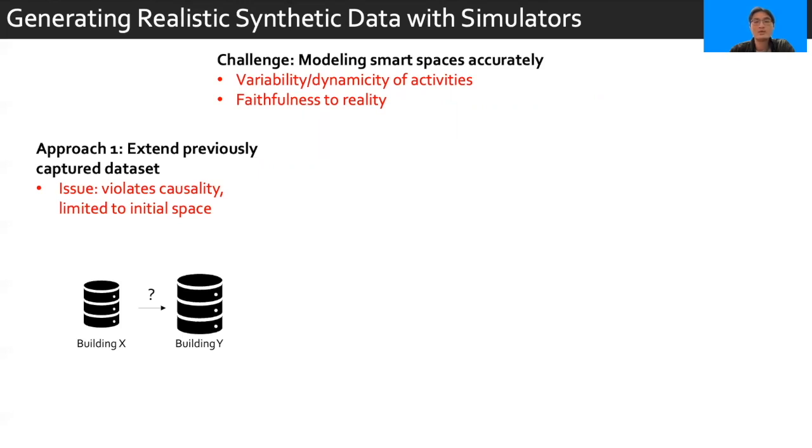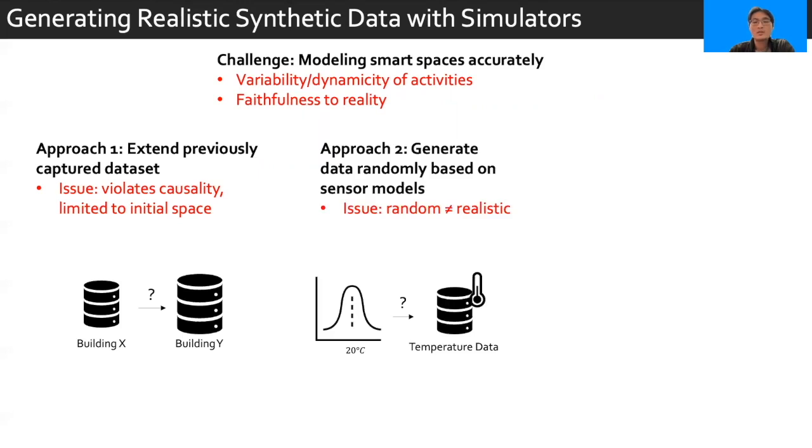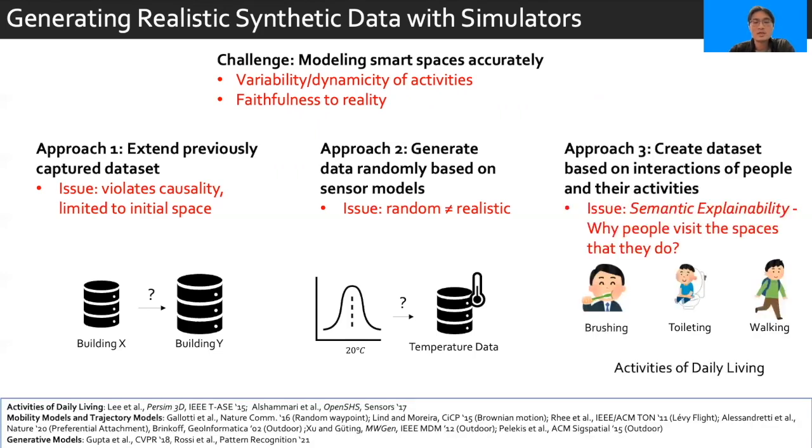To avoid this issue, one might opt to generate data randomly based on sensor models. However, meaningful evaluation may not be possible with random data. A third approach is then to create a dataset based on the interactions of people and their activities. There's been much past research in this area, from modeling activities of daily living, to mobility models and trajectory models, to more recent endeavors such as training complex generative adversarial networks, or GANs.